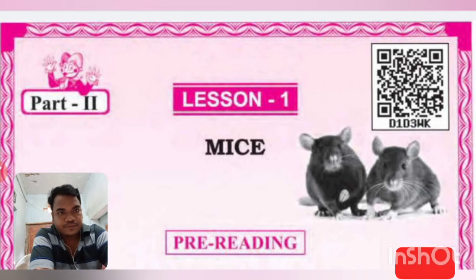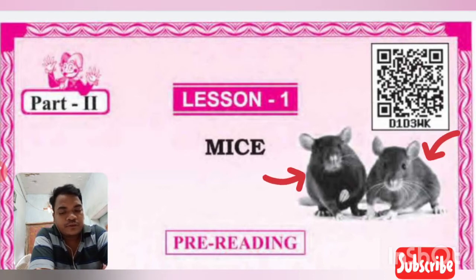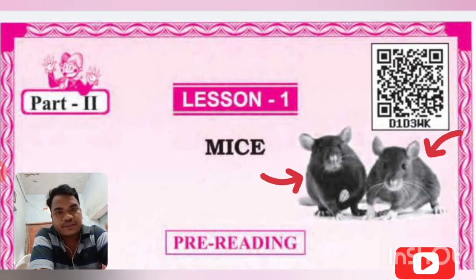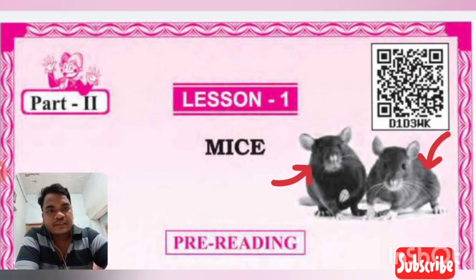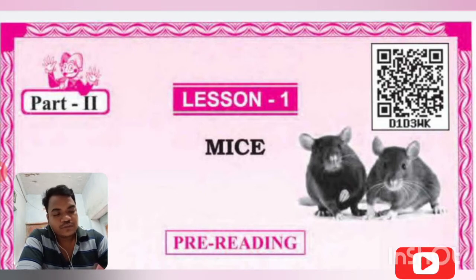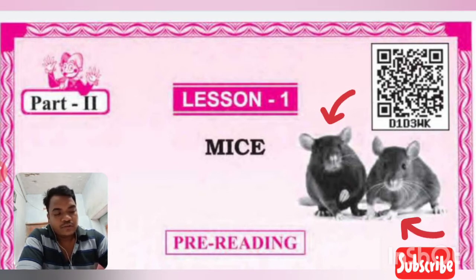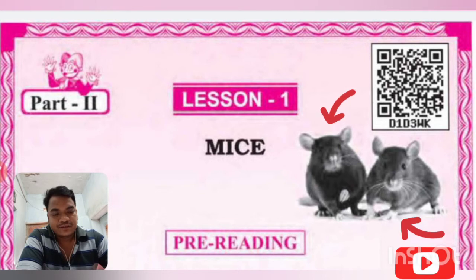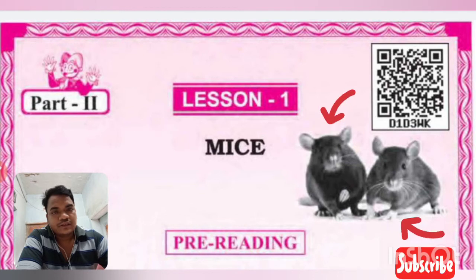So dear students, what are you seeing in this picture? There are two mice in this picture. Dear students, always remember: whenever we see more than one mouse, we call it 'mice.' So these are the two mice.